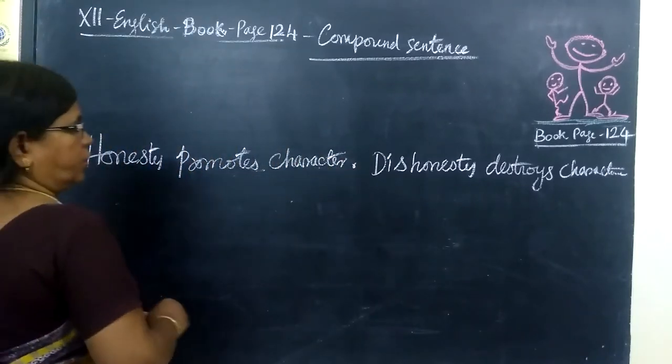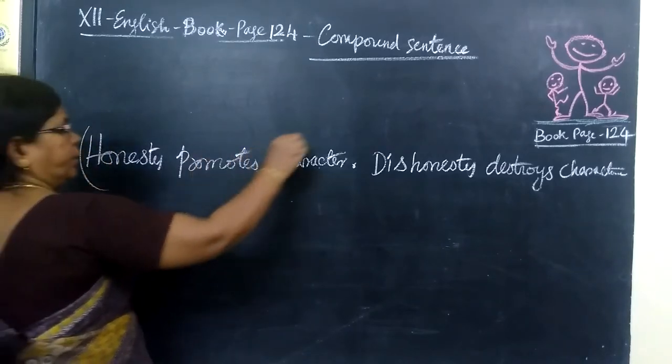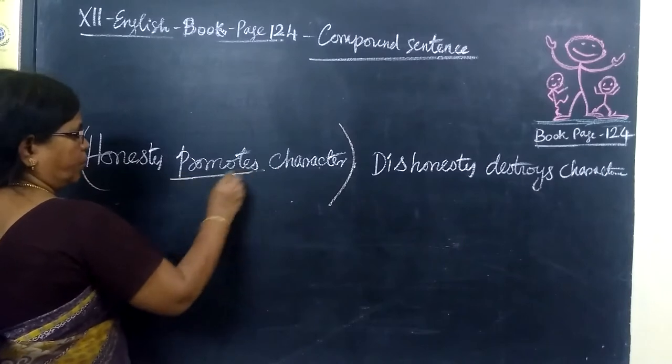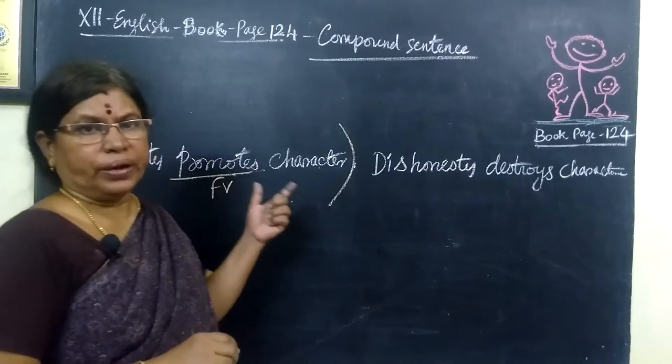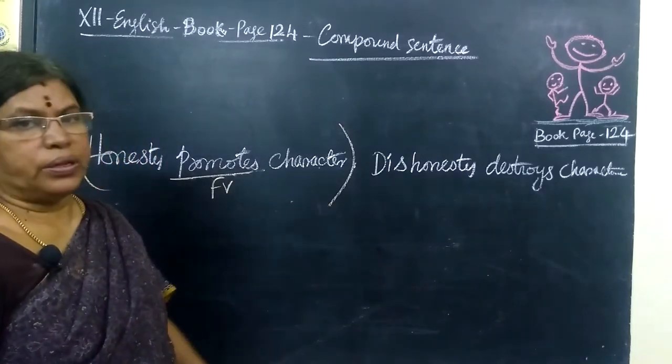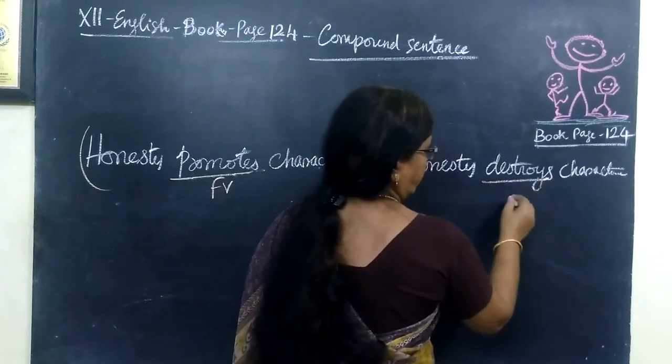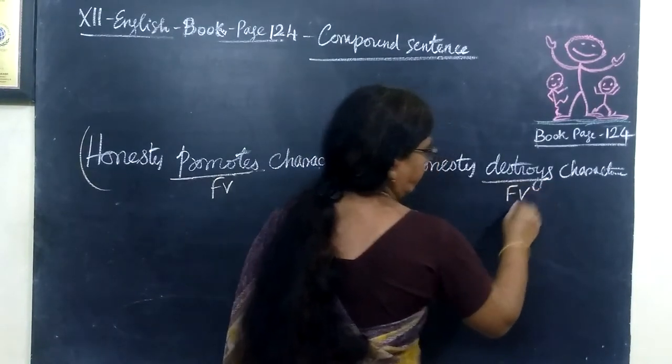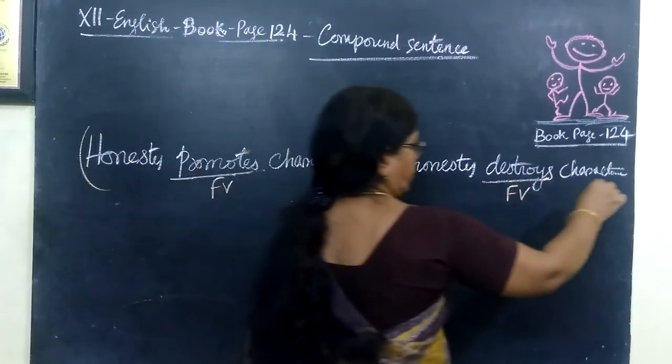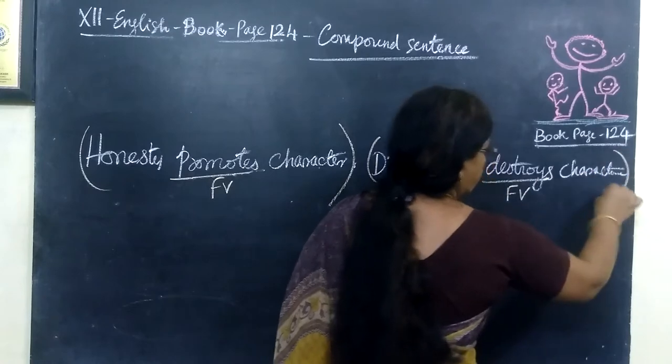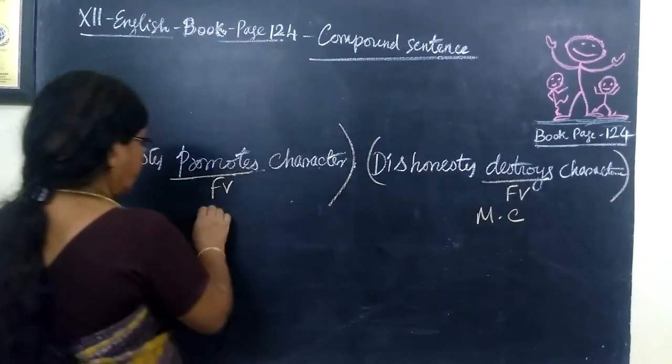Now, 'honesty promotes character' - here it is a main clause because 'promotes' is a finite verb. For a main clause we need a finite verb. Then what about the second sentence? 'Dishonesty destroys character.' Here 'destroys' is also a finite verb, so this is also a main clause.